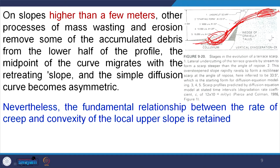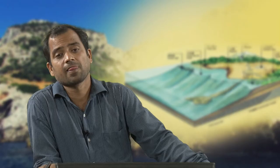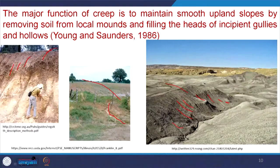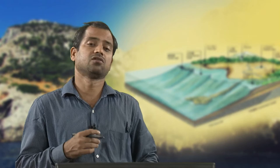The major function of creep is to maintain smooth upland slopes by removing soil from local mounds and filling the heads of incipient gullies and hollows. The main work of creep is to remove material from the upper slope and create a smooth upland. Looking at a convex slope where gullies are forming in parallel, material removed by gully erosion fills the heads of incipient gullies and hollows, maintaining the slope curve intact.